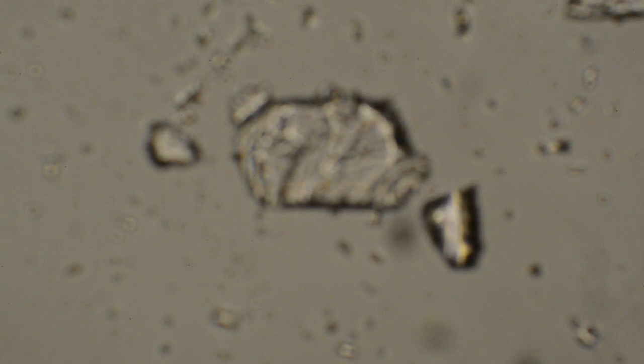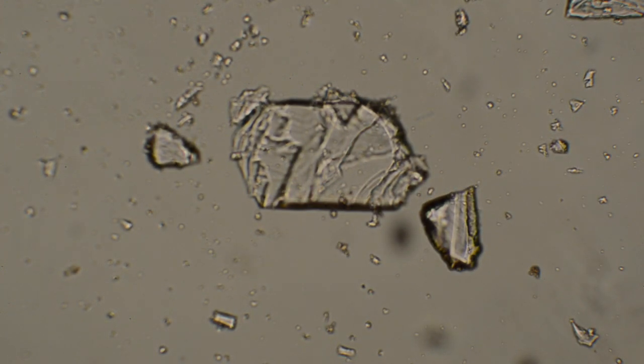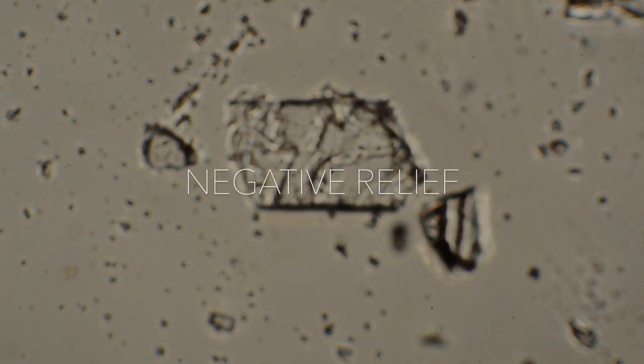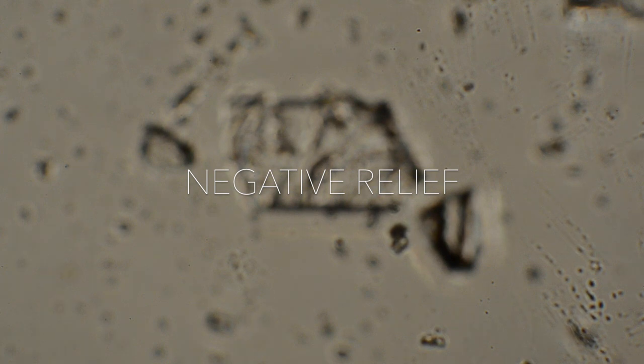In this example, as I lower the stage, we see that the Becke line moves out of the mineral. This means that this mineral has negative relief.